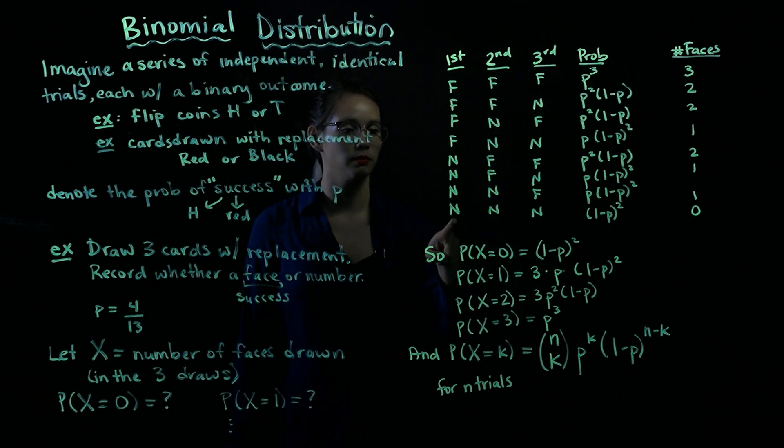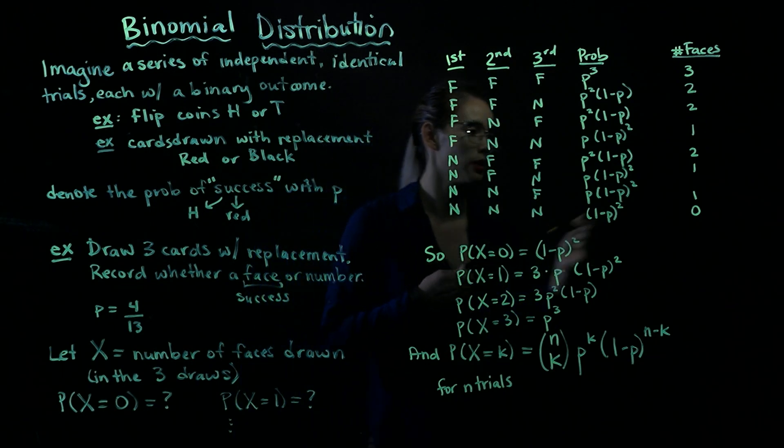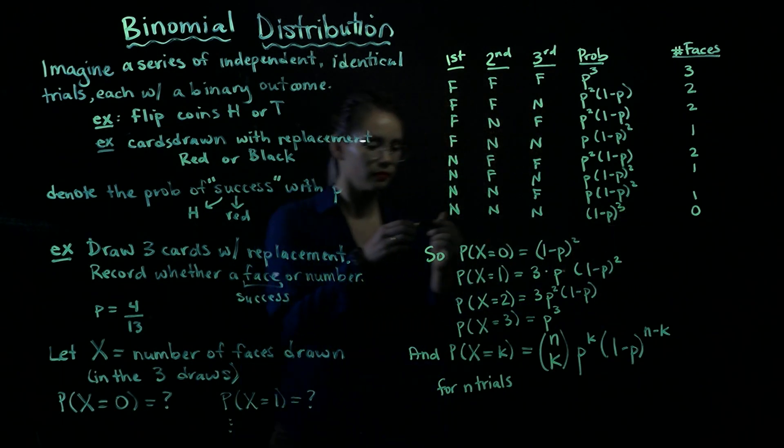If we want, we could think about this last one together. If we have number, number, number, then that means that we have three failures. So we have the probability of failure cubed.